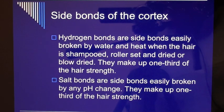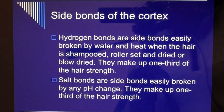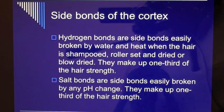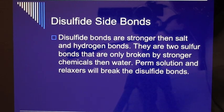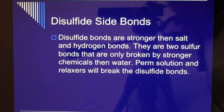Hydrogen bonds are side bonds easily broken by water and heat — when the hair is shampooed, roller set, blown dry, or heat-styled. They make up one-third of the hair's strength. Salt bonds are side bonds easily broken by any pH change and also make up one-third of the hair's strength. Disulfide bonds are stronger than salt and hydrogen bonds — they are two sulfur bonds only broken by stronger chemicals. Perm solution and relaxers will break the disulfide bonds.